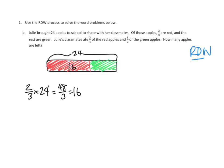24 times 2 is 48 divided by 3, and 48 divided by 3 is 16. So I know that there are 16 red apples, and the rest of them are green. So let's see, 16 plus what number would give us 24? That must be 8, right? Okay, so 16 plus 8. Two-thirds are red, the rest are green.